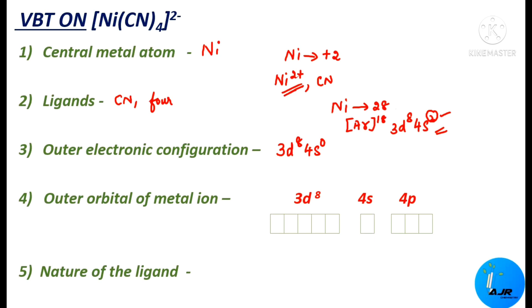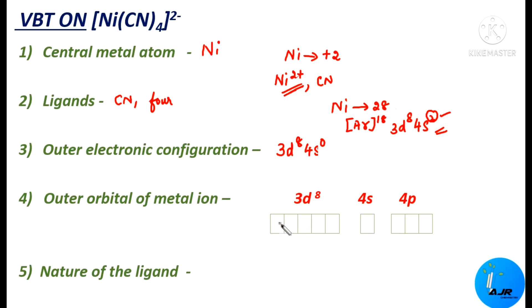We are now going to write the outer orbitals of Ni²⁺ and fill them. The outer electronic configuration is 3d⁸ 4s⁰. The accommodation of electrons takes place based on Hund's rule of maximum multiplicity, which states that electrons will be arranged singly first in all orbitals, and only after occupying all orbitals do they start to pair up.